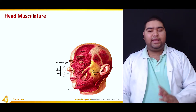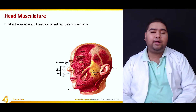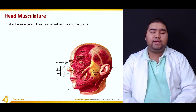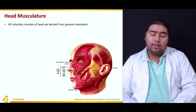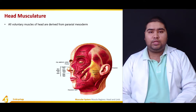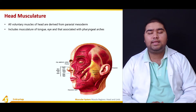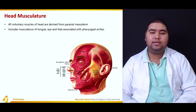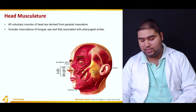First of all, the head musculature. All voluntary muscles of the head are derived from the paraxial mesoderm. Voluntary muscles are those muscles which are under the control — the will — of the human body, and you can control them however you want to. This includes the musculature of the tongue, the musculature of the eye, and those muscles which are associated with the pharyngeal arches.